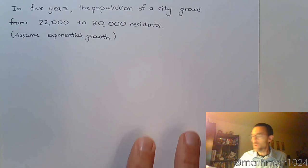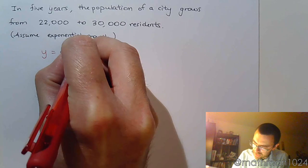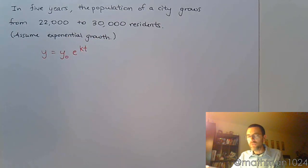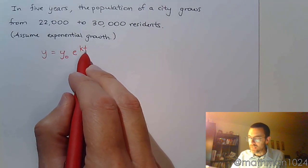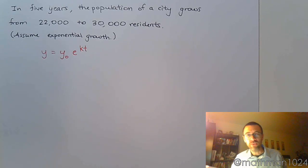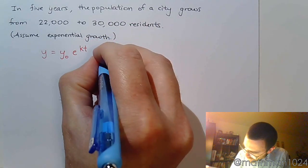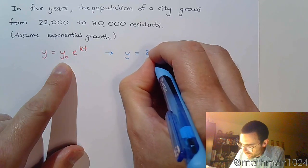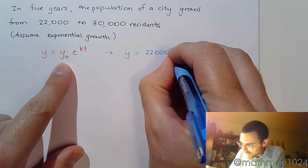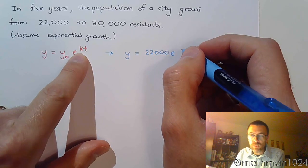When we have a question like this and we know that it's exponential, the first thing we need to do is write that formula: y equals y naught e to the kt. We've got four different things here: the beginning value, the ending value, the rate, and the time. Plug in everything that you know to find the thing that you don't know.